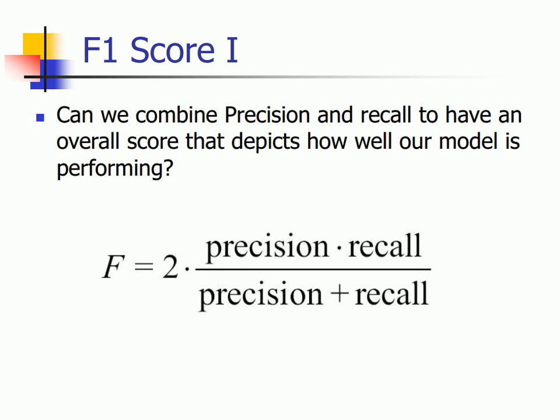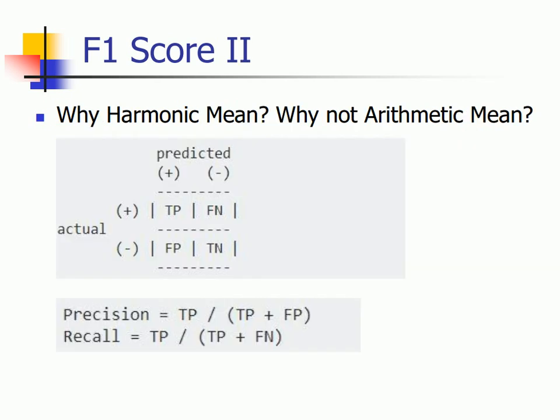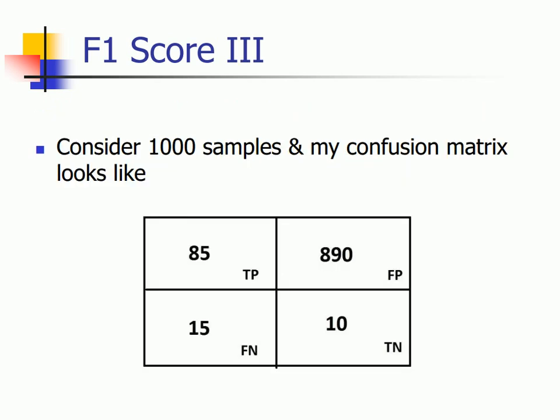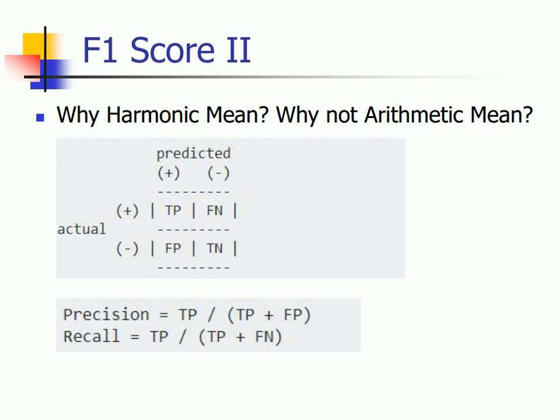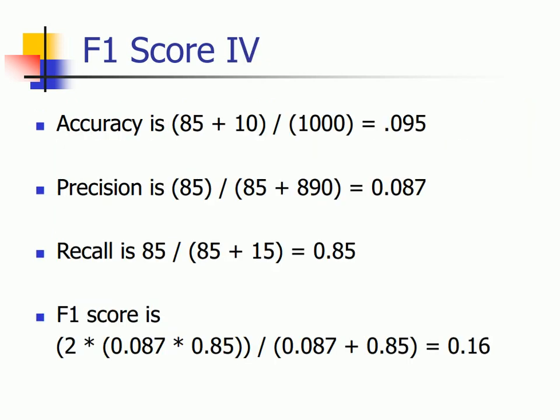F1 score is basically the harmonic mean of my precision and recall. Now you might wonder why we are taking harmonic mean and why not arithmetic mean or geometric mean? Consider a simple example of 1000 samples and a confusion matrix that looks like this. I have 85 true positives, 890 false positives, 15 false negatives and 10 true negatives. My accuracy is around 1%. My precision, based on the formula TP divided by TP plus FP — which is 85 divided by 85 plus 890 — is 1% again. But my recall, if you notice carefully, is 85 divided by 85 plus 15, which is 85%.